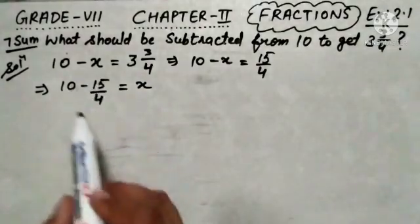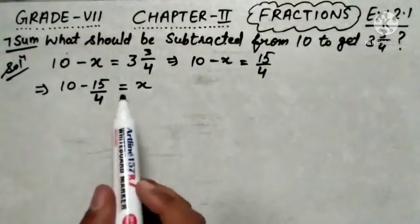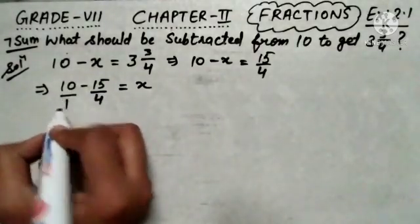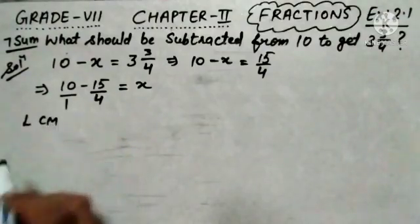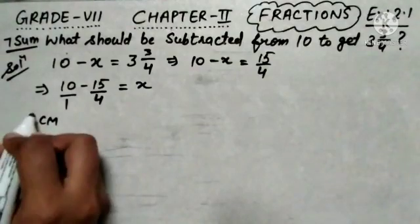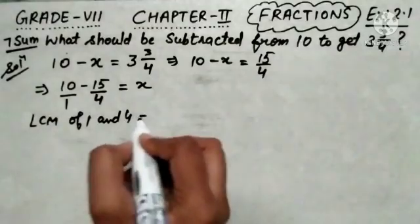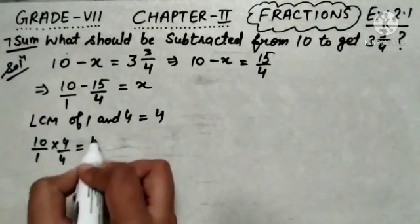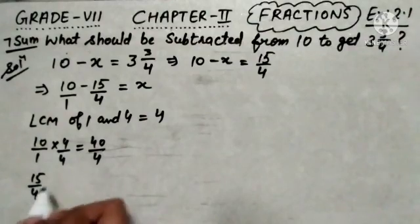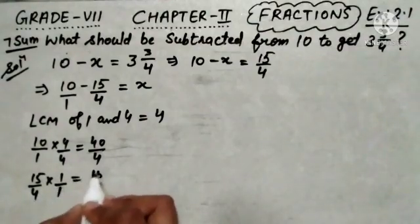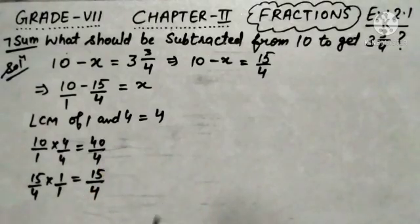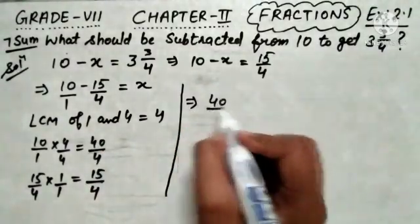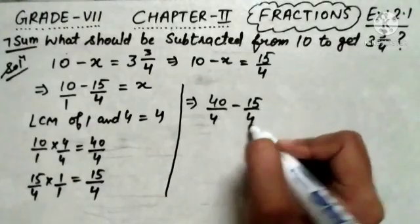That means if I subtract 15 upon 4 from 10, I get the required value to subtract from 10 to get 3 and 3 upon 4. So 10 is written as 10 upon 1. The LCM of 1 and 4 equals 4. So 10 upon 1 multiplied by 4 upon 4 gives 40 upon 4, and 15 upon 4 multiplied by 1 upon 1 remains 15 upon 4. These two terms become like terms, so we write 40 upon 4 minus 15 upon 4 equals x.